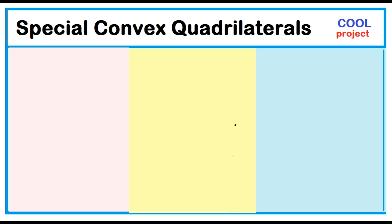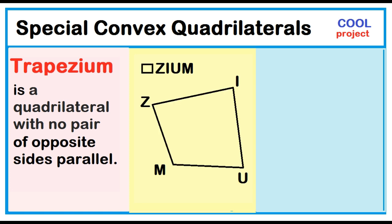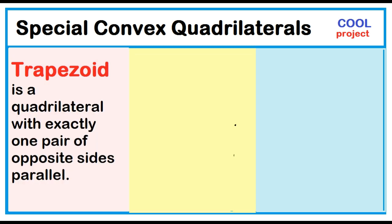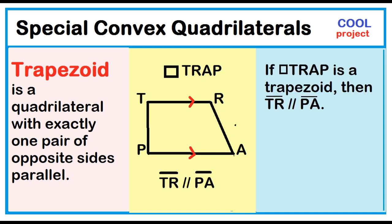Special convex quadrilaterals. A trapezium is a quadrilateral with no pair of opposite sides parallel. A trapezoid is a quadrilateral with exactly one pair of opposite sides parallel. Quadrilateral TRAP has one pair of opposite sides parallel, so it is a trapezoid. Then segment TR is parallel to segment PA.